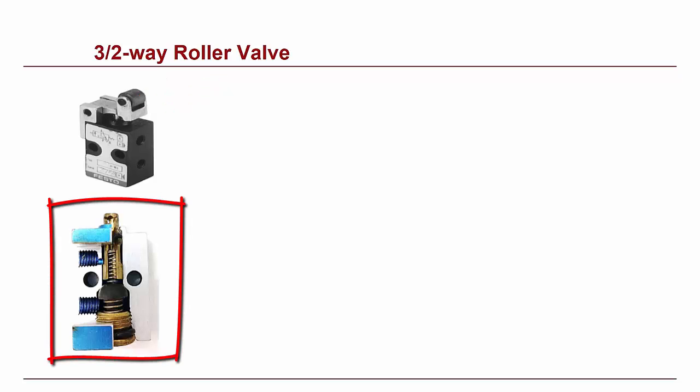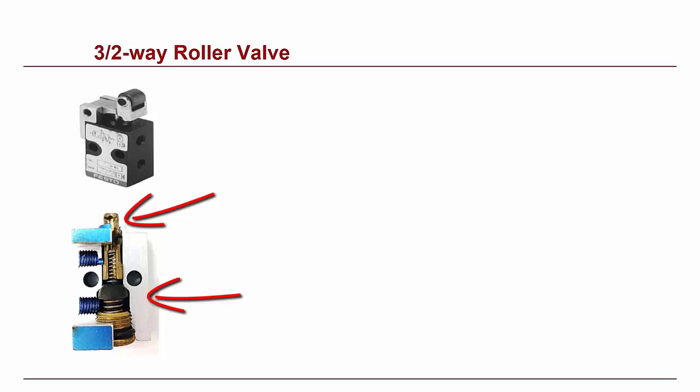This is the cross-sectional view of the 3-2-way roller valve, without the roller lever. Only the moving part and valve body are shown.